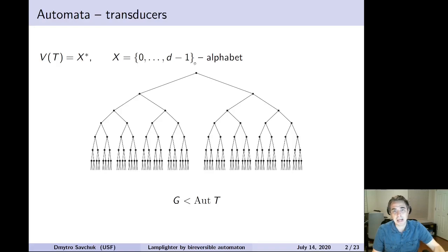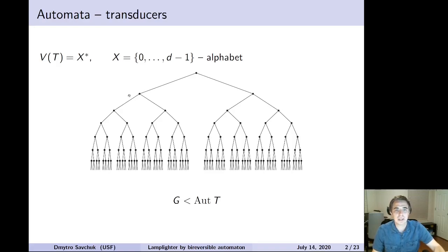We start from an alphabet X with d letters, and then X* will denote the set of all finite words. The root of the tree will be denoted by the empty word, and the vertices are labeled 0, 1, 00, 01, and so on.